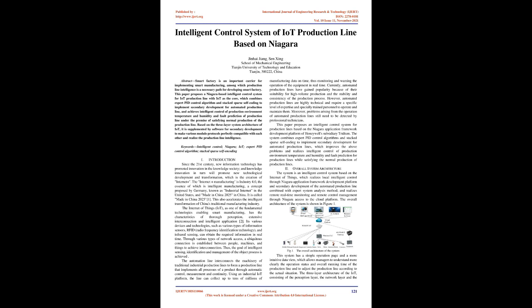The Internet of Things (IoT), as one of the fundamental technologies enabling smart manufacturing, has the characteristics of thorough perception, extensive interconnection, and intelligent application. Its various devices and technologies, such as various types of information sensors, RFID (radio frequency identification technology), and infrared sensing, can obtain the required information in real time. Through various types of network access, a ubiquitous connection is established between people, machines, and things to achieve interconnection, and the goal of intelligent sensing, identification and management of the object process is achieved. The automation line interconnects the machinery of traditional industrial production lines to form a production line that implements all processes of a product through automatic control, measurement, and continuity.